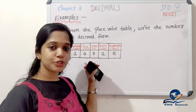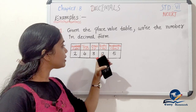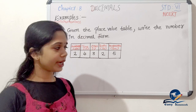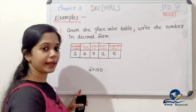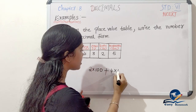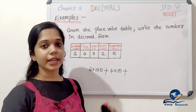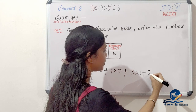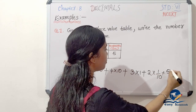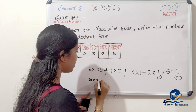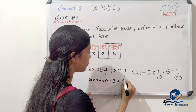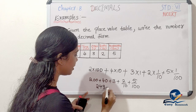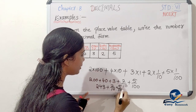Here we will write the number in decimal form. We have digits in the hundreds place, tens place, ones place, tenths place, and hundredths place. We will convert the number to decimal form. That gives us 2×100 + 4×10 + 3×1 + 2×(1/10) + 5×(1/100), which equals 200 + 40 + 3, giving us 243 for the whole number part.